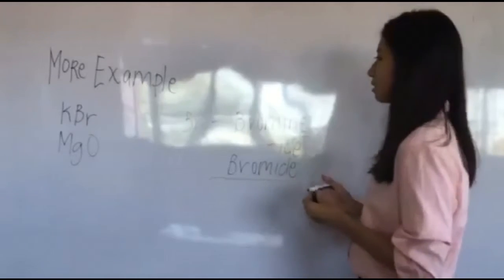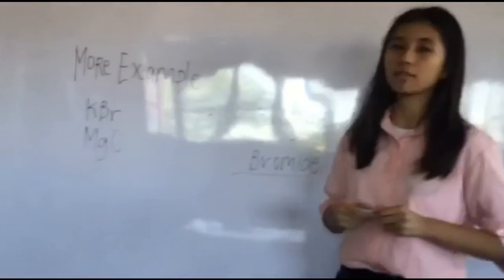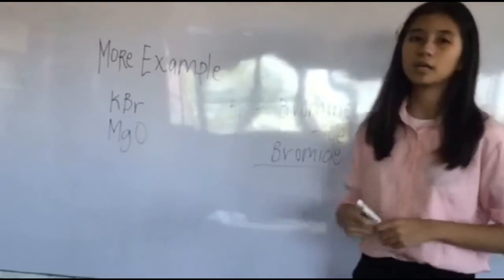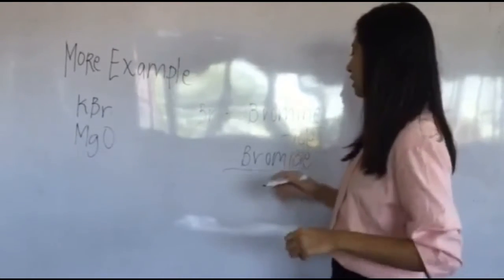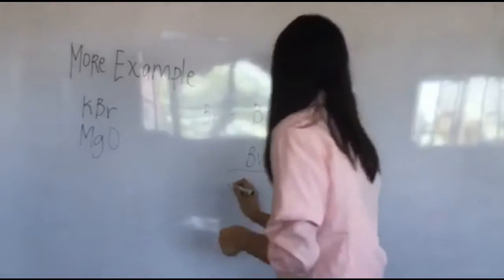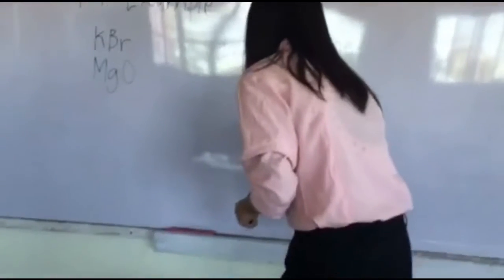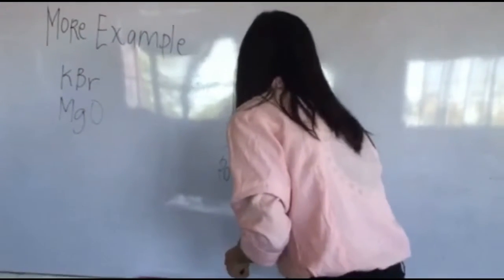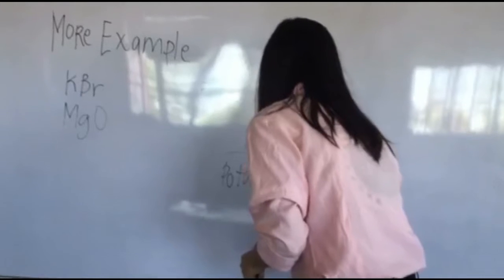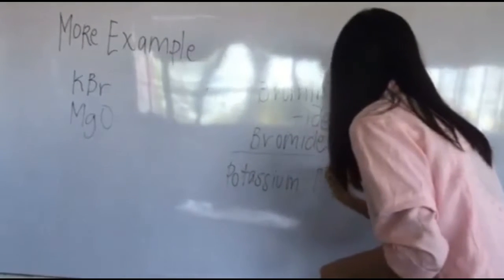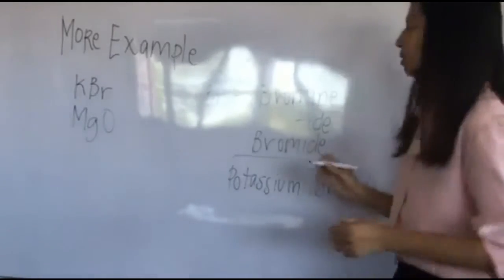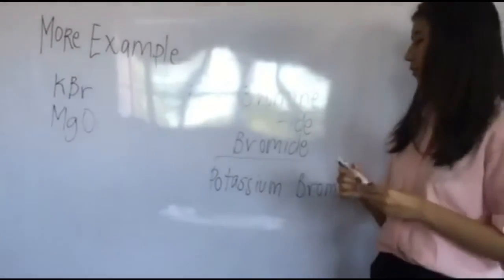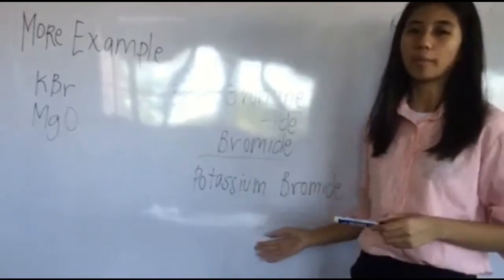Then we take the first element, which is K, and it's potassium. So now, our final name is potassium bromide.